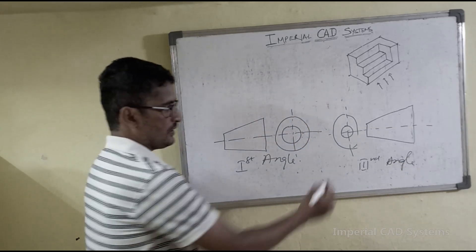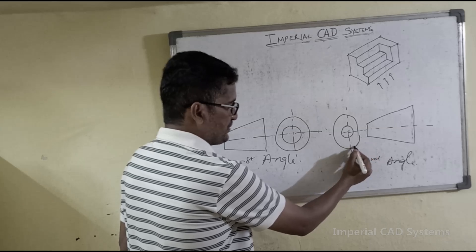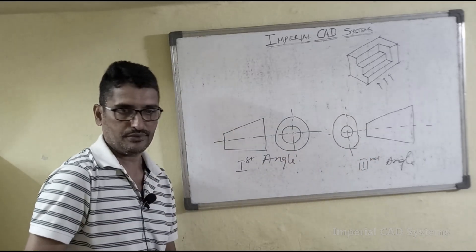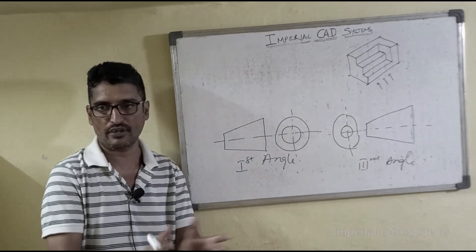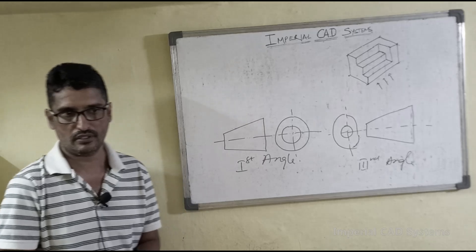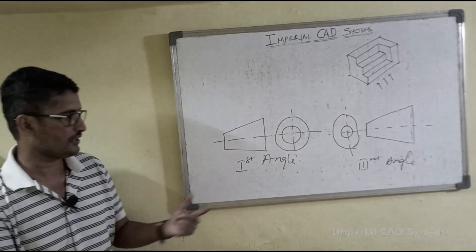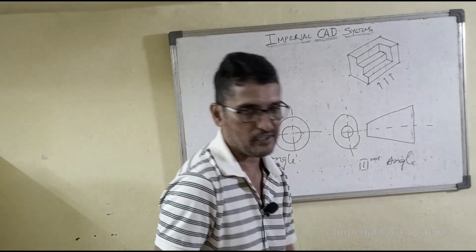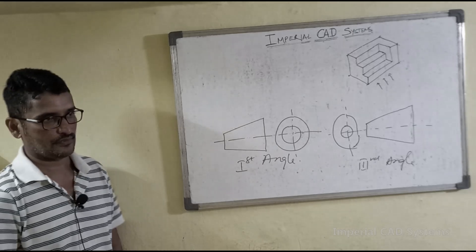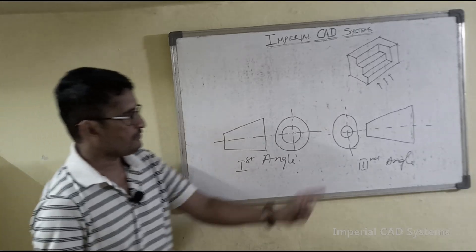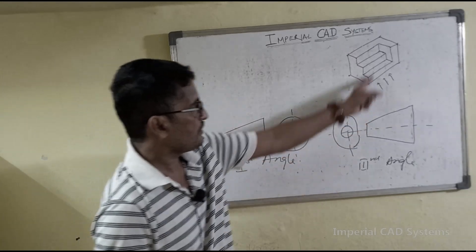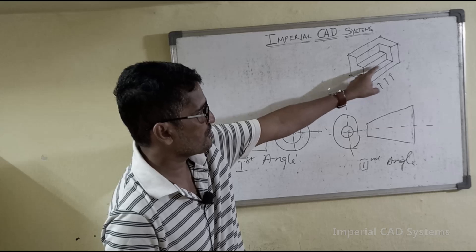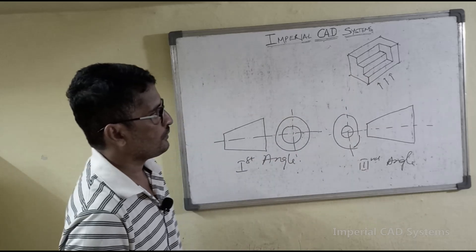By seeing these symbols in the title block, you can come to know whether the drawing is positioned in first angle or third angle of projection. For example, this is one block shown in isometric view.